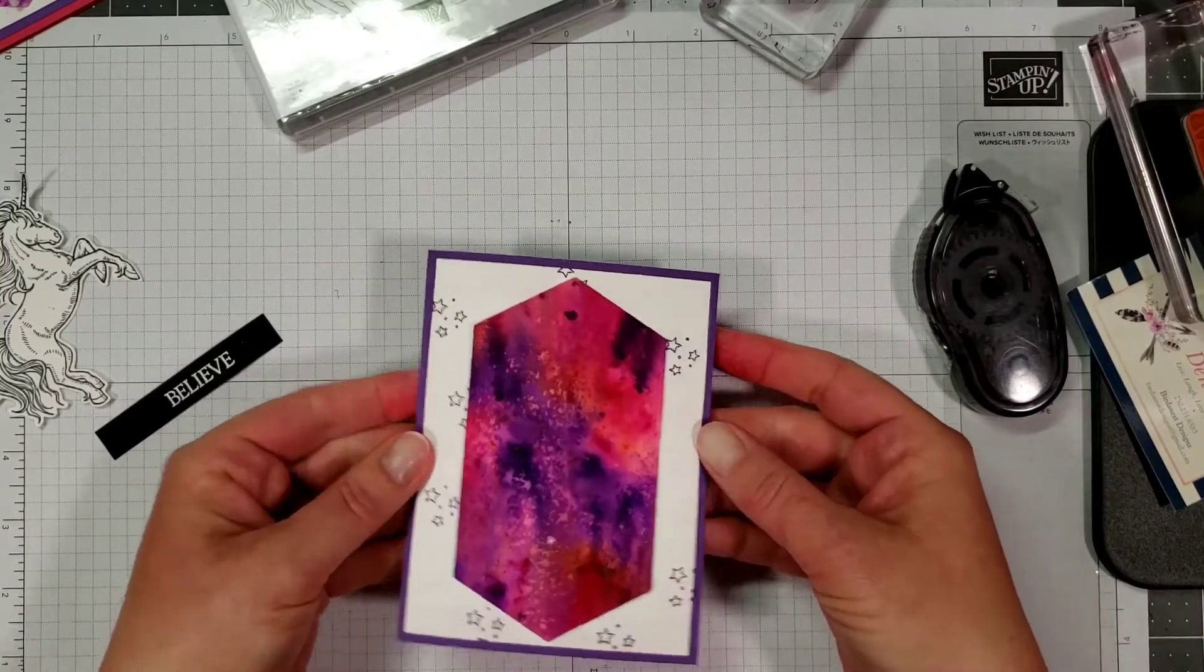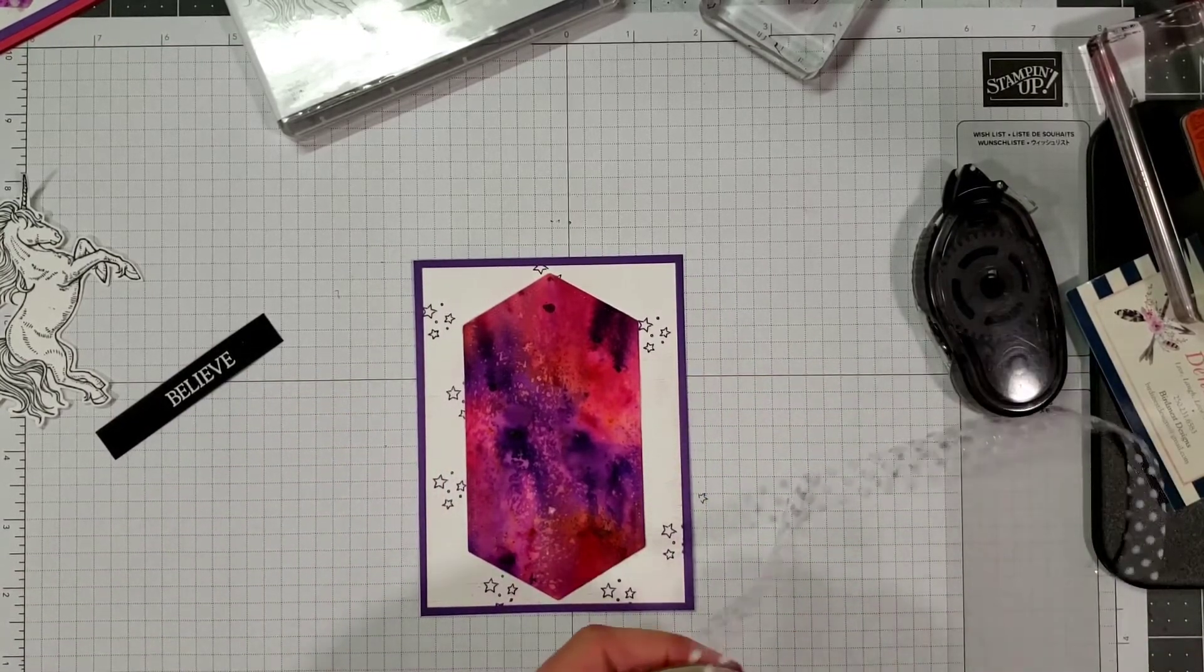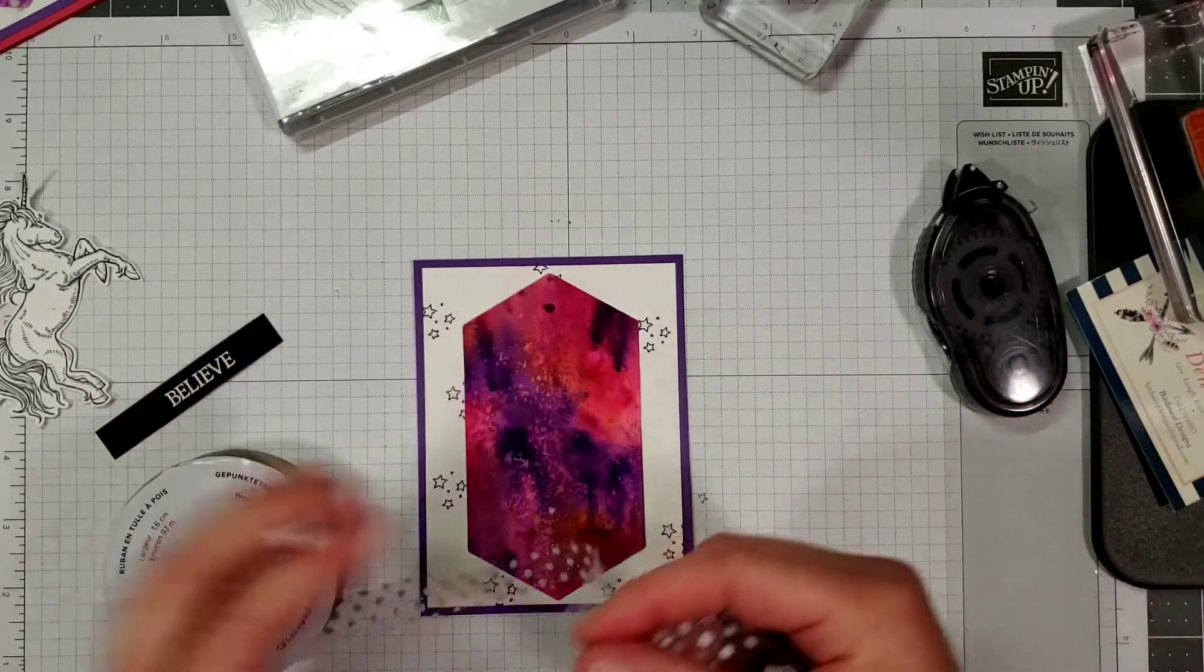So there we've got the card base itself done. Next thing I want to do before we start adding the unicorn is taking some polka dot tulle ribbon and we're just going to wrap that around.